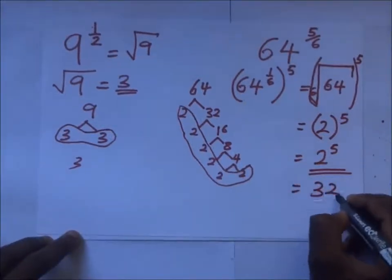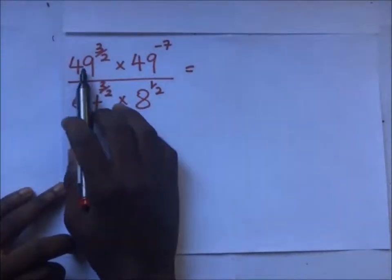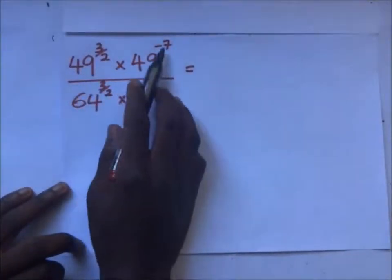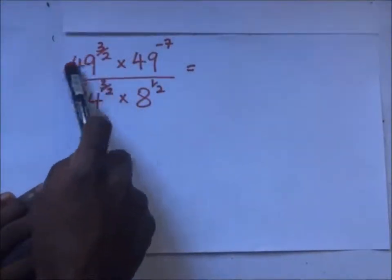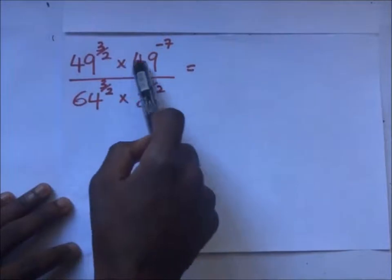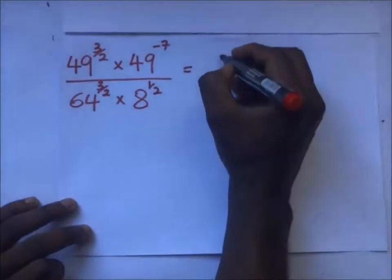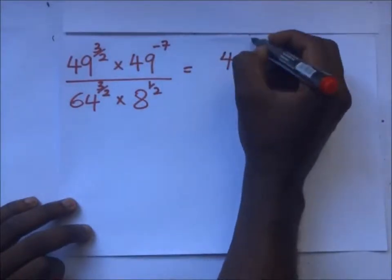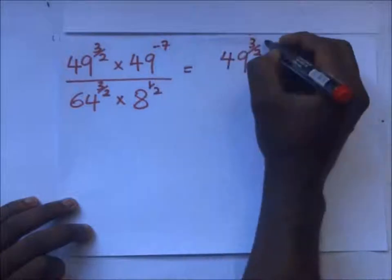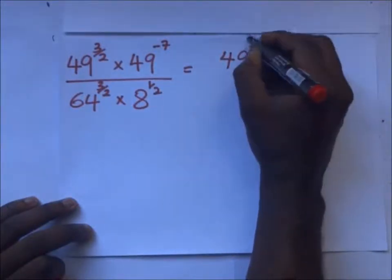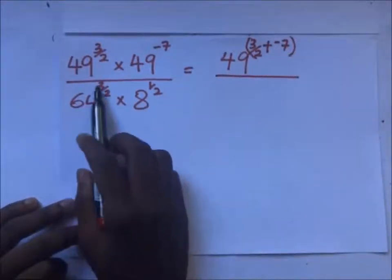Now we have 49 to the power 3 over 2 times 49 to the power negative 7. These two indices are being multiplied and they have the same base — 49. So we simply add the powers: 49 to the power 3 over 2 plus negative 7.